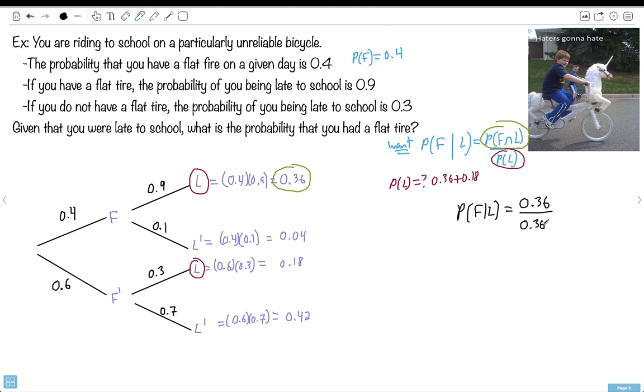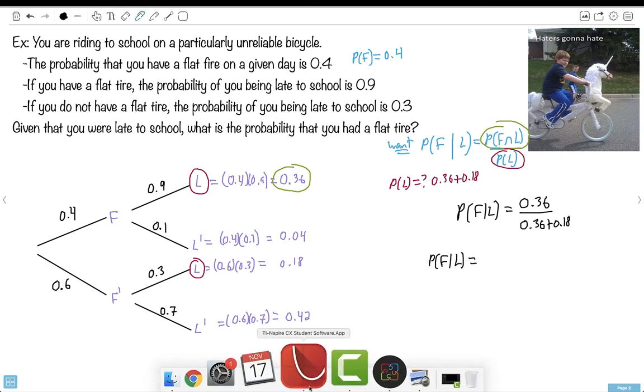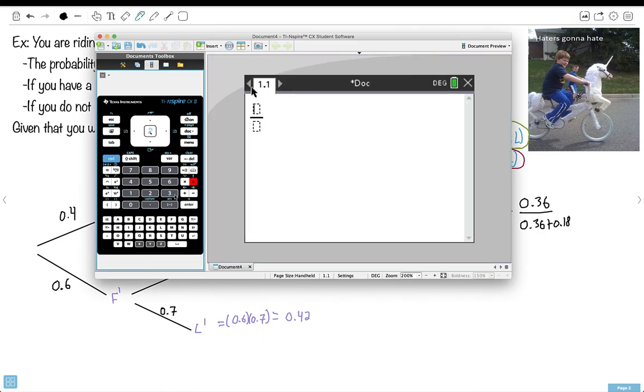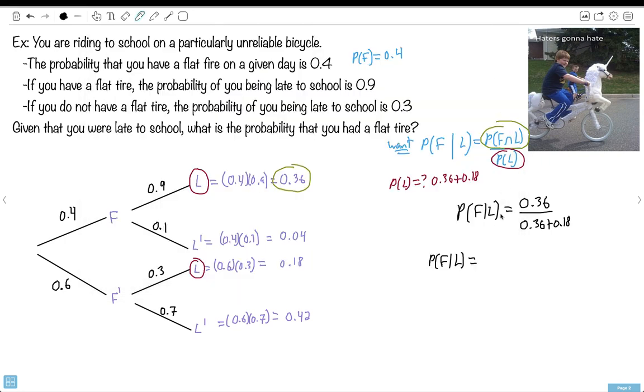That's where I get this number here, 0.36 plus 0.18. Well then I just have to do this on my calculator. So flat given late is just going to be 0.36 over 0.36 plus 0.18. I end up with 0.66666 repeating, so three significant figures will be 0.667. Do you see how we could solve this? So this is actually a fairly difficult looking question. And the key was, draw yourself a tree diagram. It helps you to figure things out. It was a conditional probability, so we had to find the probability of flat and late. But that was here. And we had to figure out the probability of late. There's two ways you were late, either flat late or not flat and late. So we just added those two numbers. That's how we did it. Ta-da!